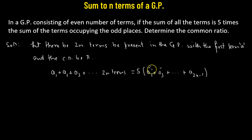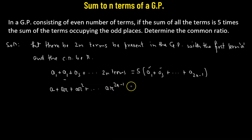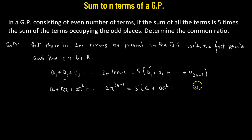Here, a1, a3, and the last term a(2n−1) are occupying the odd places. So expanding: a plus ar plus ar² all the way up to ar^(2n−1), equals 5 times a plus ar² plus all the way up to ar^(2n−2).